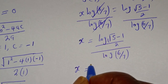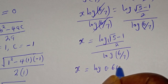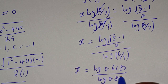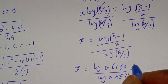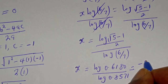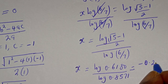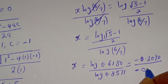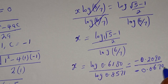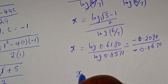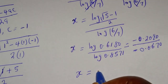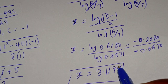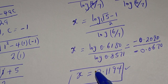s equals log(0.6180) over log(0.8571), which equals approximately minus 0.2090 over minus 0.0670. Therefore s is equal to approximately 3.1194. This is the final answer. Thank you for watching — don't forget to like, share, comment, and subscribe. Bye bye.